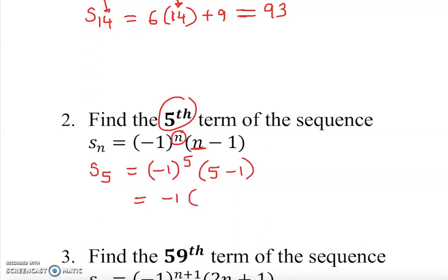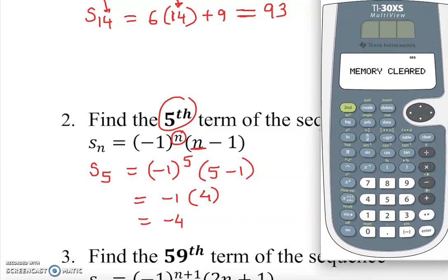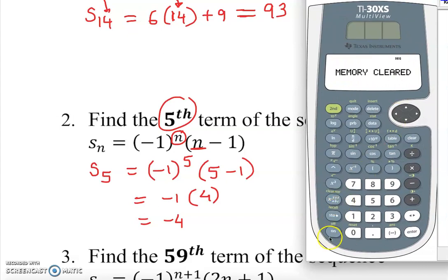Now if you want to take help from a calculator, you can actually type this in. So what can you do? You can do open parentheses, negative 1, close parentheses, and this is going to give you square, but we have a 5, so we cannot use this. So we're going to use this power button, and it's definitely going to be 5.